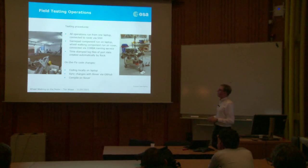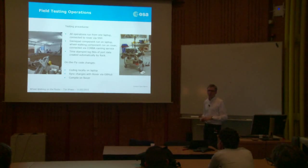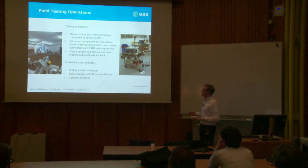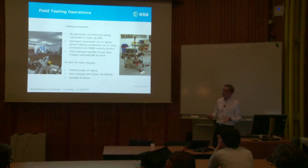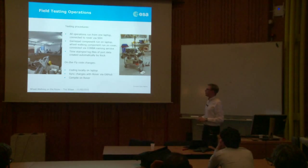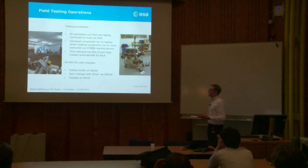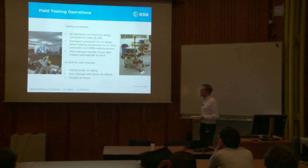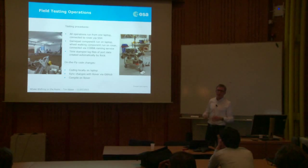For logging, as mentioned, we just needed that one line in the code — Rock handled the rest, giving us timestamped log files we could evaluate afterwards. Because we also had internet and GitHub access, we could do code changes either locally or at ESTEC, sync the changes to the rover via GitHub, simply compile, and then continue the tests.